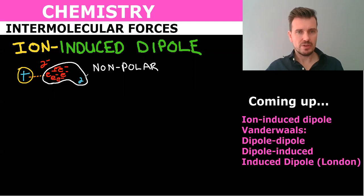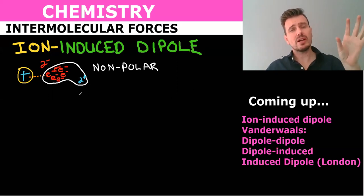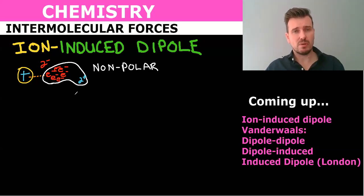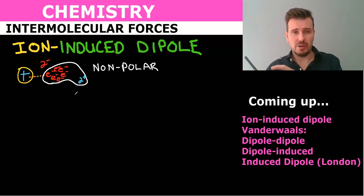And so in an otherwise non-polar molecule we have these temporary poles. These forces are not quite as strong as the ion-dipole because of this temporary nature — it's creating a pole rather than there being a consistent, constant pole in a polar molecule.